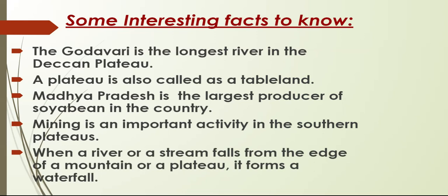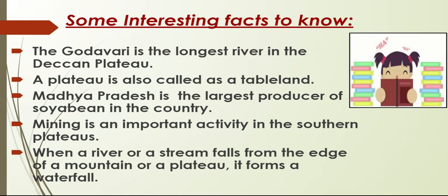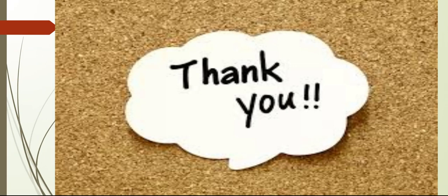The Jog Falls in Karnataka is a very famous waterfall. Along with the Godavari — the longest river in the Deccan Plateau — we have two more rivers: Krishna and Kaveri. So three rivers, Godavari, Krishna, and Kaveri, originate from the Western Ghats and flow eastwards. We have marked all of this on Map 5.1, Location of the Southern Plateau and Islands, on page 38. Please learn these interesting facts. Thank you, children — this was Video 1 of Concept 1.